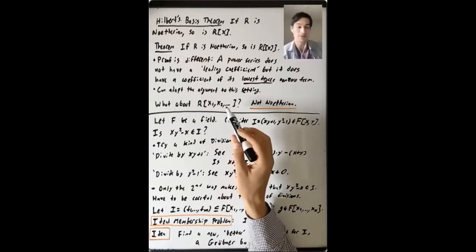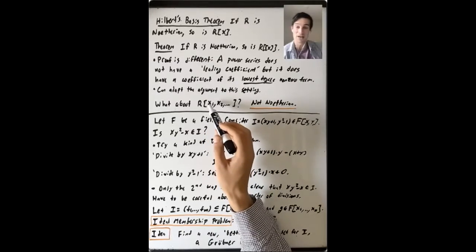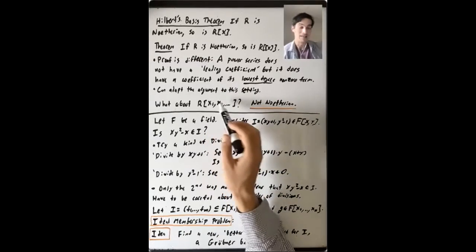This ring is like the one example of a ring where we've seen an ideal that is not finitely generated, right? So our first example was you take R equals Q, and you take the ideal generated by all of the XIs, X1, X2,